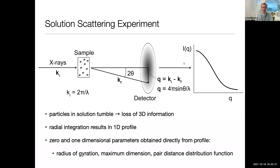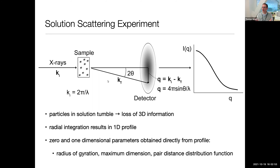For those of you that are not familiar, this is a basic outline of a solution scattering experiment. On the left, we have our incident x-rays — we can use neutrons — coming in, and we have our sample, which is typically in some kind of aqueous solvent for biological macromolecules or another type of solvent for materials. Because it's in solution, the molecules are tumbling in random orientations. When they scatter, their three-dimensional intensity functions all add up and you end up with an isotropic scattering pattern on your two-dimensional area detector.